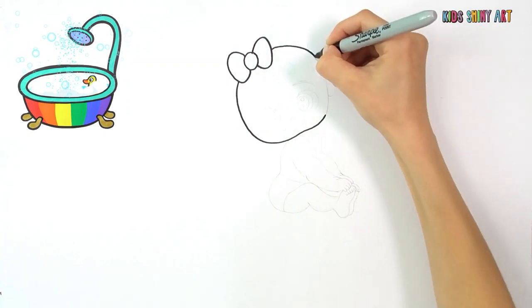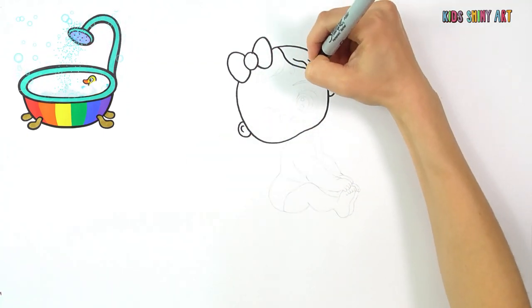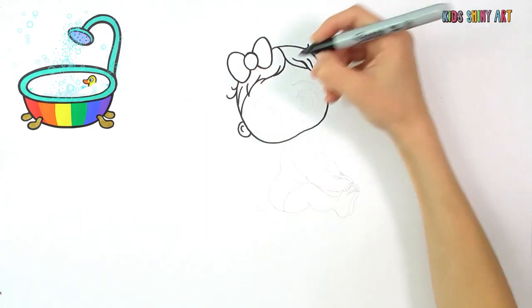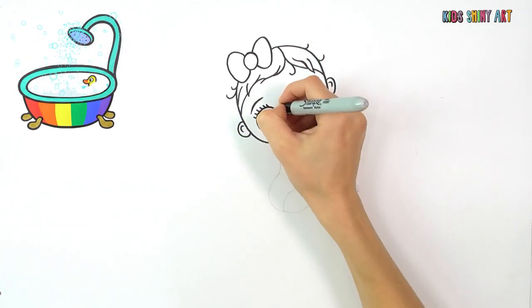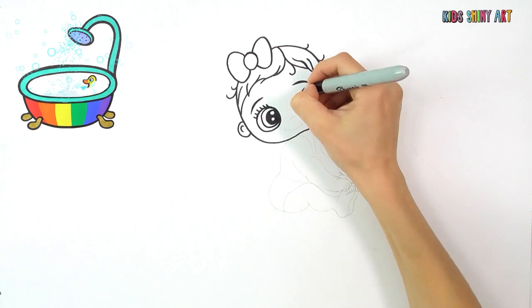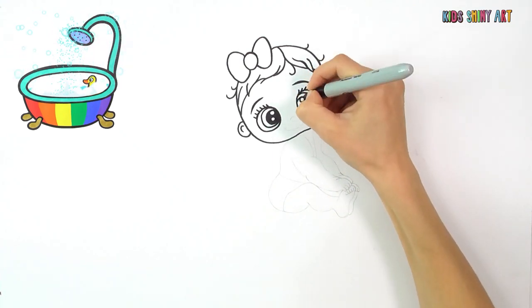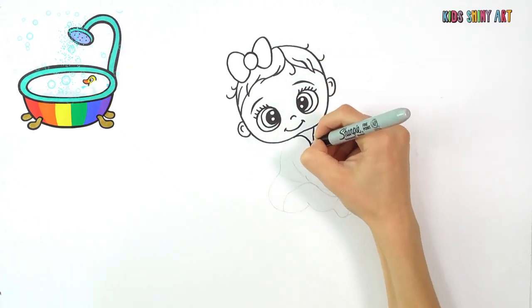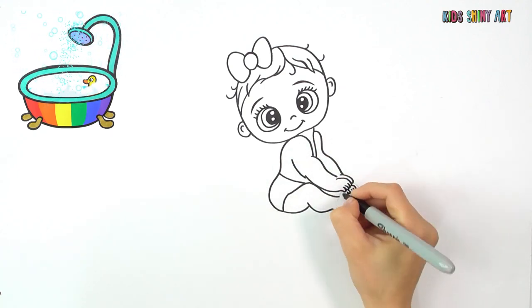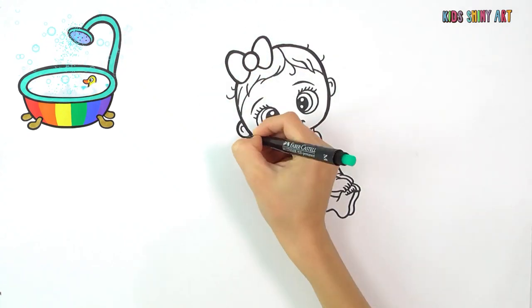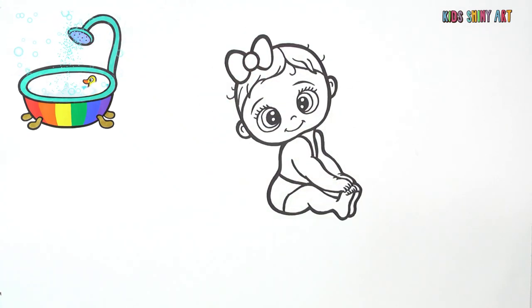Now let's draw baby Lisa. Let's draw her hair, her eyes, and her body. We're done! Yay!